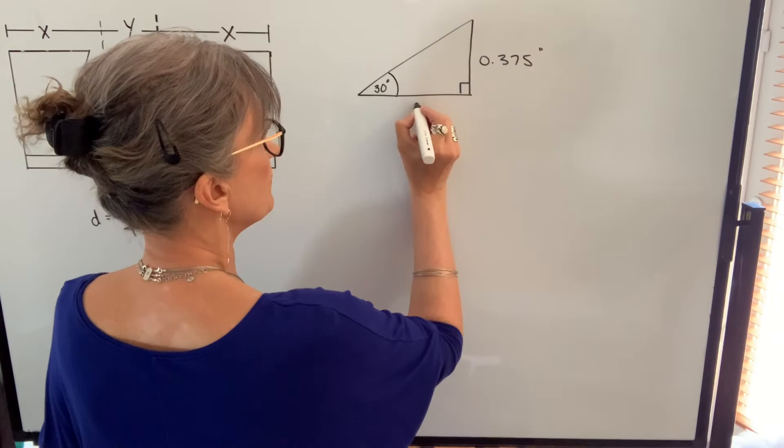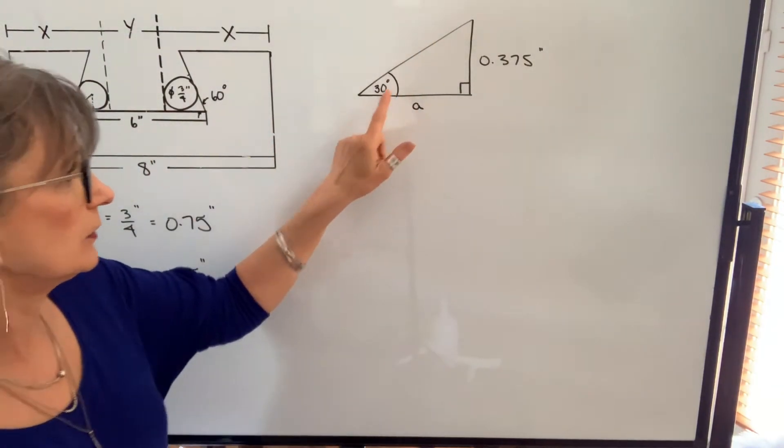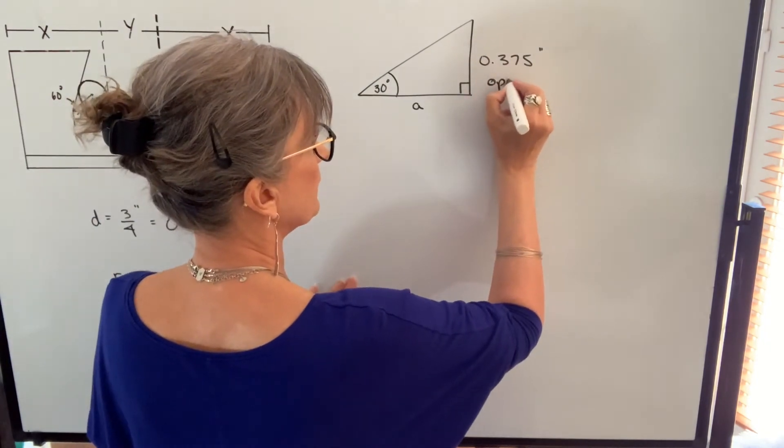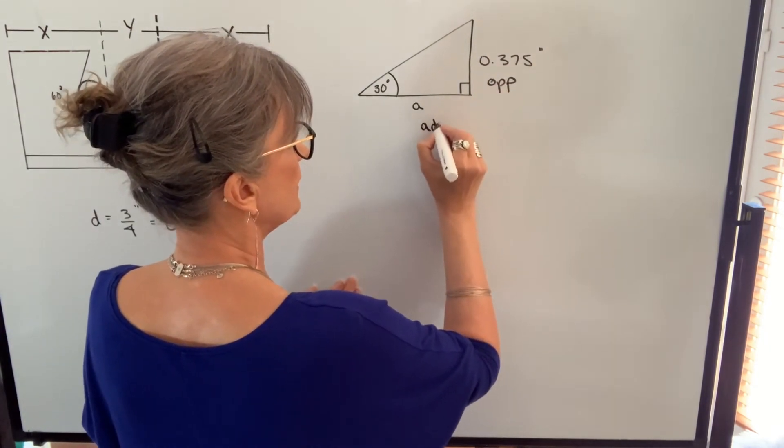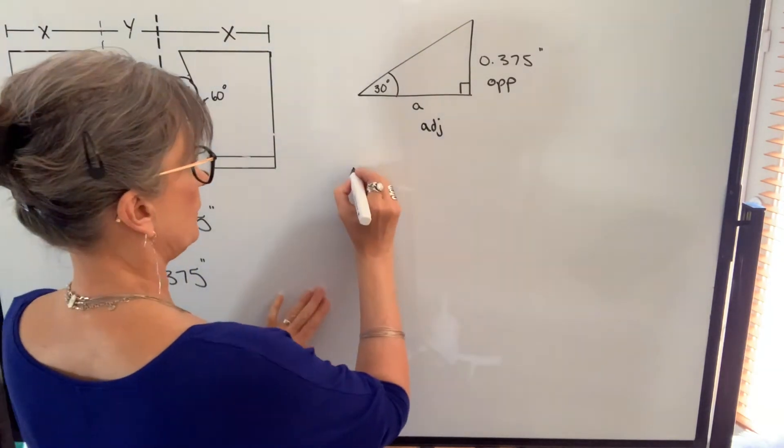I don't know this dimension. I'm going to call it A. In relation to this angle, this side is the opposite side. This side is the adjacent side. And the trig function that uses opposite and adjacent is the tangent function.